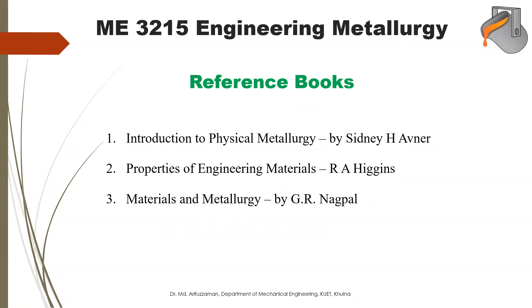For reference books, the main textbook I will follow is Introduction to Physical Metallurgy by Sidney H. Avner. Another important one is Properties of Engineering Materials by R.A. Higgins. The third, Metals, Materials and Metallurgy, is a book you should purchase — it is very important for this course and also required for your laboratory sessions in ME 3216. It is a good guide for metallurgical engineers.